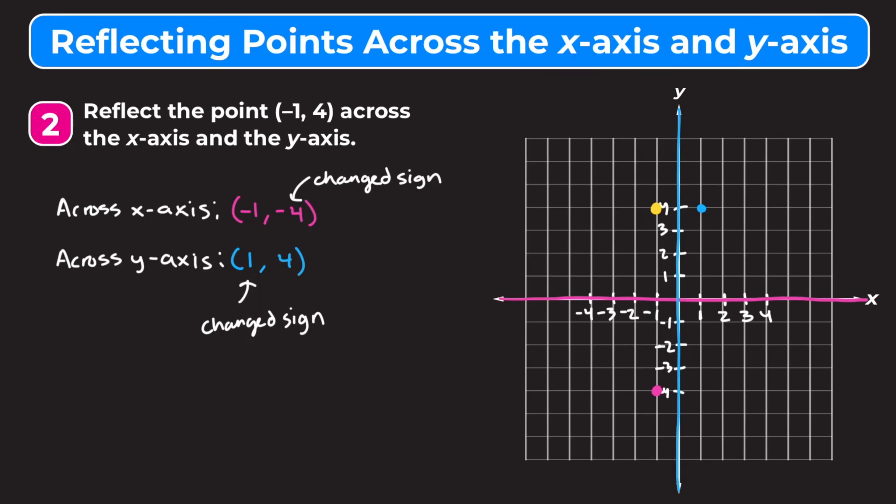Hopefully this video helped you understand how to reflect points across the x and y-axis. You can always just plot them, or you can remember: if you're reflecting a point across the x-axis, just flip the sign of the y-coordinate; if you're reflecting a point across the y-axis, just flip the sign of the x-coordinate.